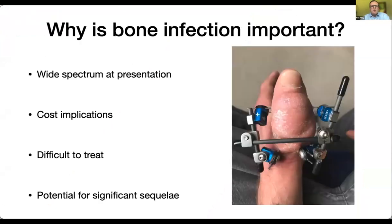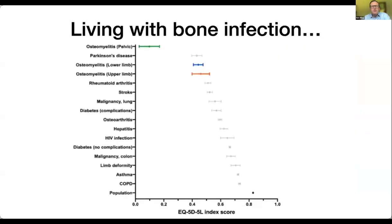So why is bone infection important? You see a huge spectrum of presentation. You can have acute fracture-related infections all the way through to very chronic, indolent infections that patients have lived with for long periods of time that intermittently discharge. Regardless of where you are in the world, there are significant cost implications associated with bone infection, and it can be really tricky to treat. And there's the risk of potential sequelae. Before we move on to talk about sequelae, we should probably talk about what it's like to live with a bone infection.